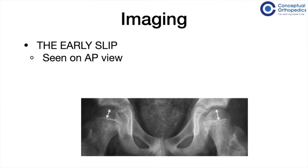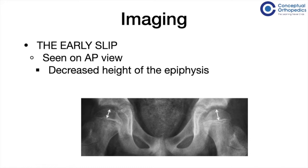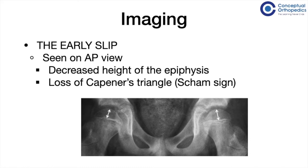On the AP view, an early slip can be seen as a decreased height of the epiphysis or a loss of the Capnus triangle, also known as the Shám sign. On the left side we can see a triangular portion of the medial femoral neck which overlaps with the posterior wall of the acetabulum — this is the Capnus triangle. On the right side, the Capnus triangle is decreased in size. This loss of Capnus triangle, the Shám sign, is also an initial finding seen in early slips.